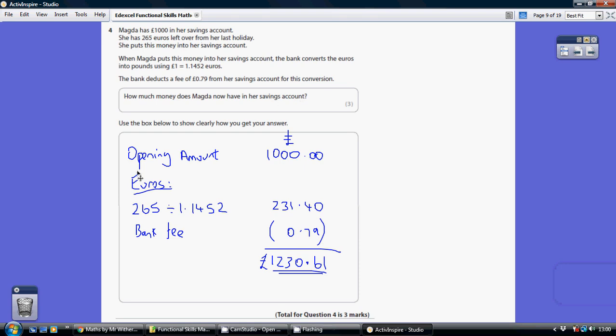So she kicks off with £1,000 in her savings account. Now, we've got to go and convert these euros into pounds.